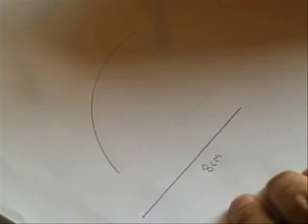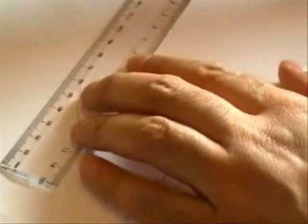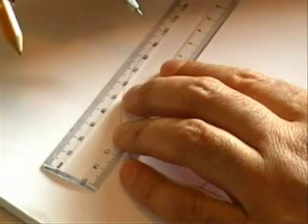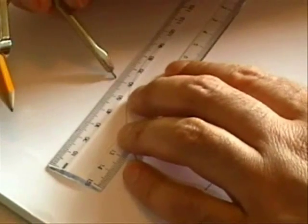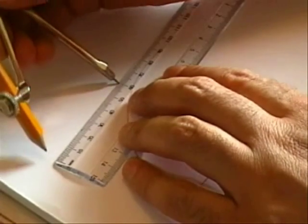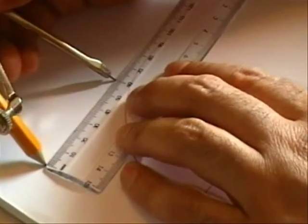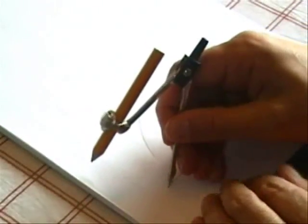And the other length I'm going to have is going to be 6cm. So I'll repeat the process and this time I open my compass aperture to 6cm. And that's 6cm. And this time, placing the needle here, I simply draw an arc.